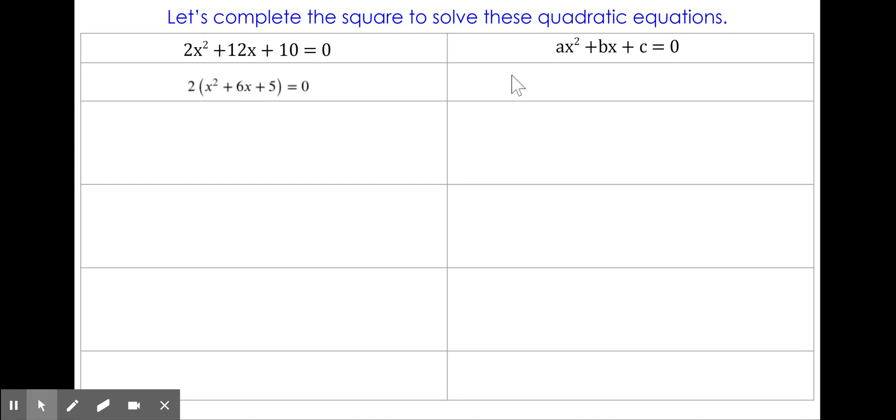We're going to do the same thing on the right and factor our leading coefficient of a out of all three terms. a times x squared divided by a is simply x squared, and you can see that I've taken b and c and divided them by a as well.